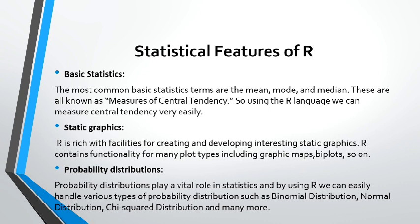Probability distribution plays a wide role in statistics, and by using R we can easily handle various types of probability distributions such as binomial distribution, normal distribution, chi-squared distribution, and many more. In general, doing binomial or normal distribution calculations manually is very hard and time-consuming, but using R programming it becomes very easy with simple lines of code to get the result.